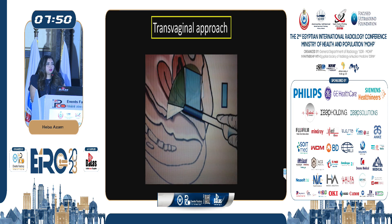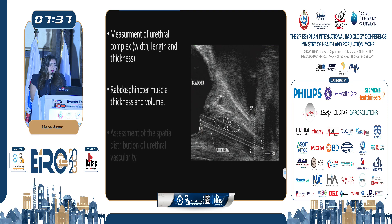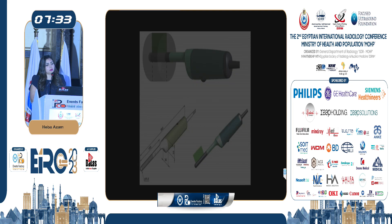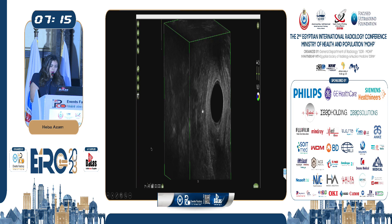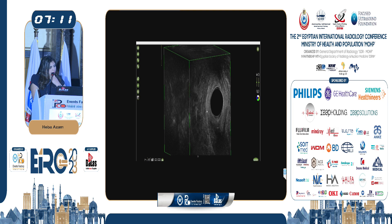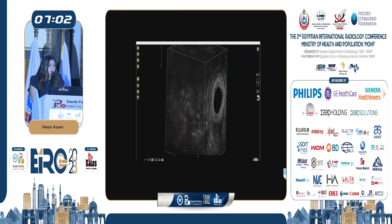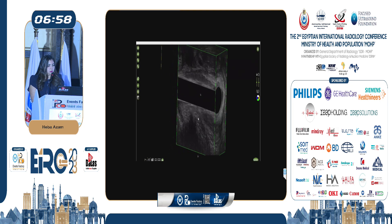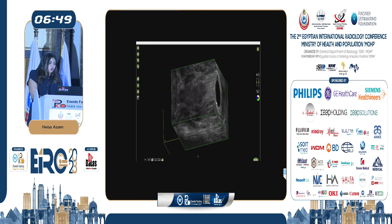In the transvaginal approach, we can use either the biplane probe, which allows assessment of the urethral complex with length and thickness, the rhabdosphincter thickness and volume, and the spatial distribution of urethral vascularity, or the 360-degree endoluminal probe, which acquires 360 transaxial images over an area of 60 millimeters in 60 seconds. A specific application then allows visualization of the 3D volume by scrolling cranially and caudally through axial images, rotating the cube to view sagittal reconstructions, or rotating in the other direction to view coronal reconstructions.